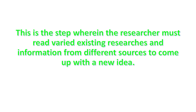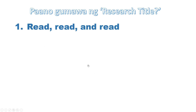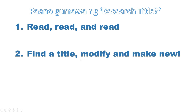So, that is the first way kung paano tayo gagawa ng isang research title. This is also a prerequisite so that magiging effective yung paggamit natin ng susunod na mga paraan na ituturo ko sa araw na ito. The second o yung pangalawang paraan para magawa ng research title is: refine the title, modify, and make new. This way is pretty much handy, lalong-lalo na kapag nahihirapan kung anong pattern yung susundin mo sa pagawa ng isang research title.